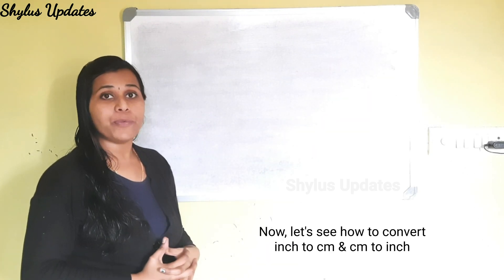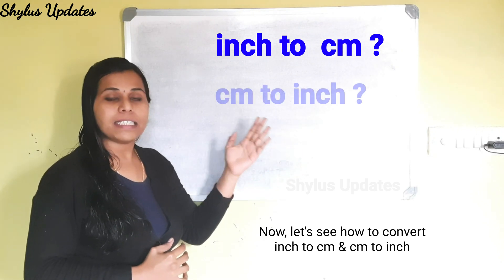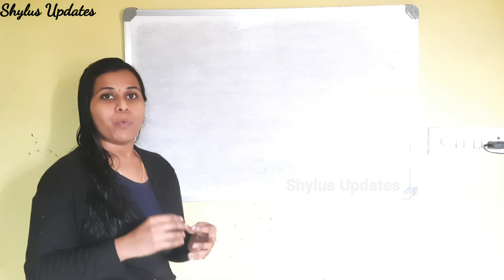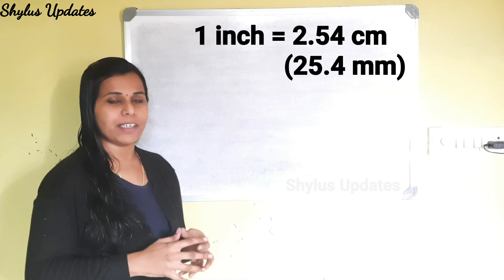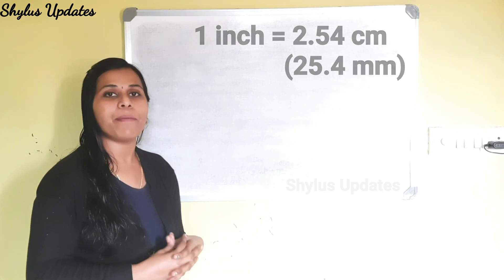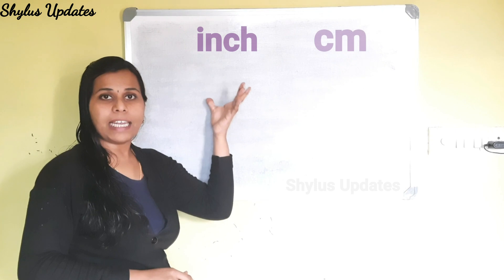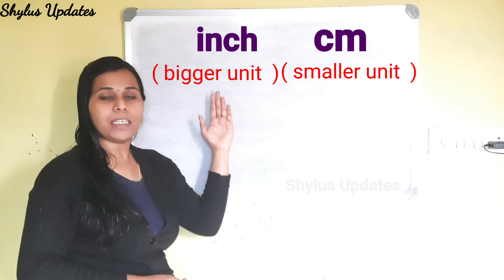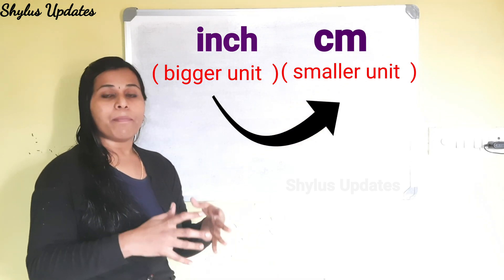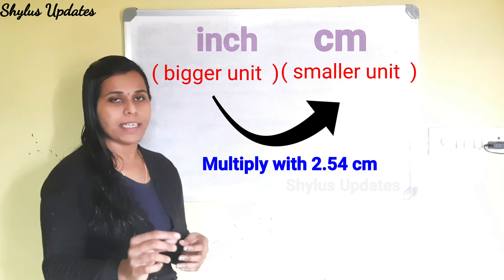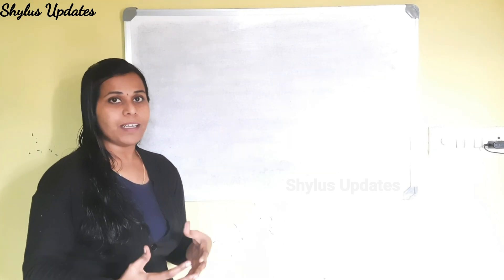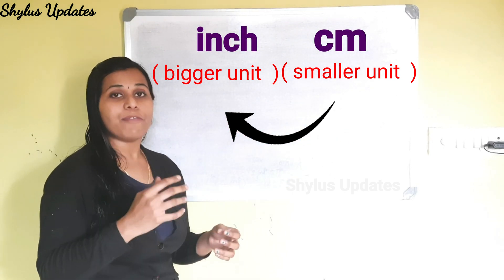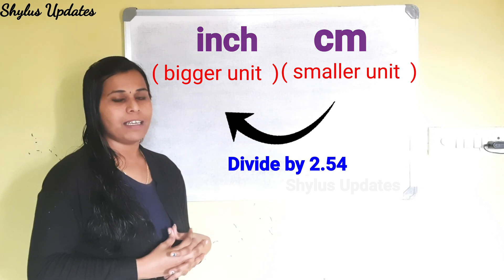Now let's see how to convert inch to centimeter and centimeter to inch. The same trick applies here. 1 inch is equal to 2.54 centimeter, which is equal to 25.4 mm. Since inch is a bigger unit than centimeter, to convert from inch to cm, multiply the given number by 2.54. To convert from centimeter to inch, divide the given number by 2.54.